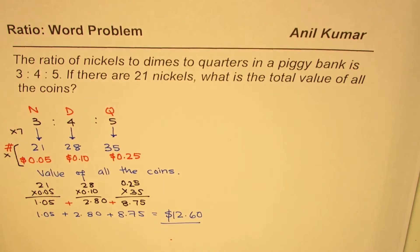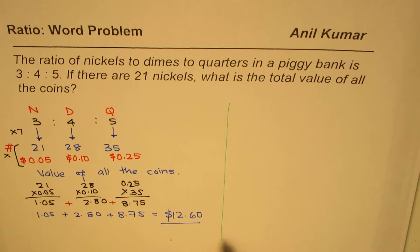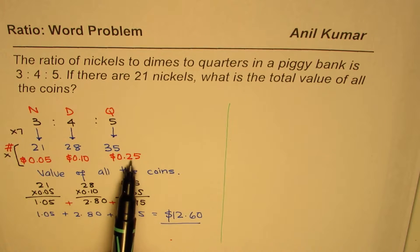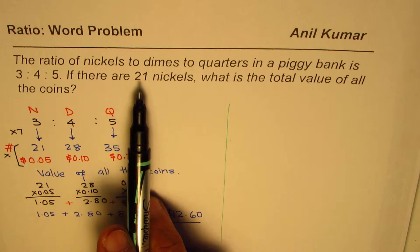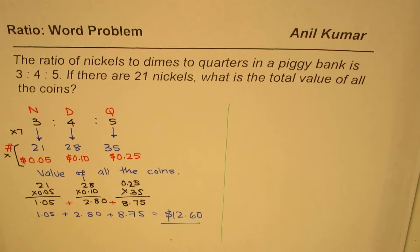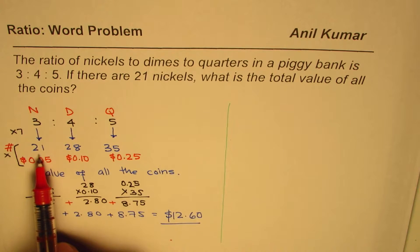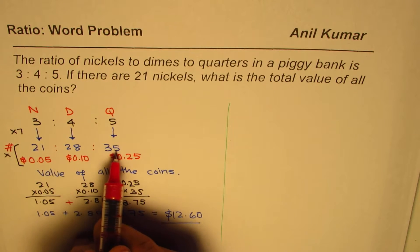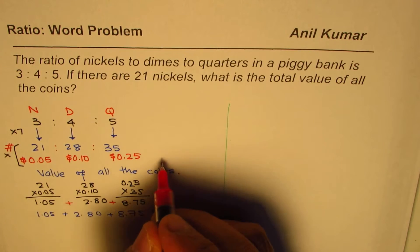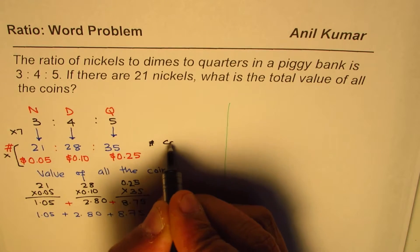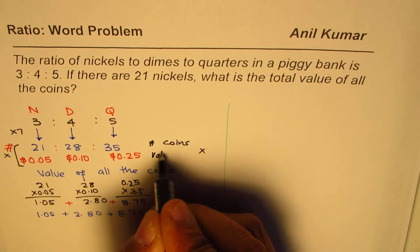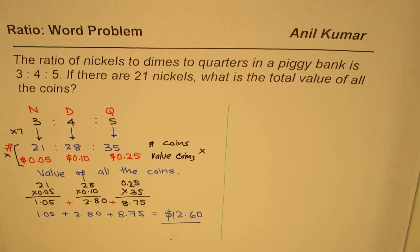You should always round your answer to two decimal places whenever you are doing a question on coins. So these are the steps to solve such a question. When you know nickels, dimes, and quarters, each has a value of 5 cents, 10 cents, and 25 cents. Since we were given 21 nickels, we knew the multiplier is 7, so all ratios are multiplied by 7 to get the equivalent ratio 21 is to 28 is to 35. That gives you the number of coins, and you multiply by the value of each coin to get the total value, then add it all up to get the answer.